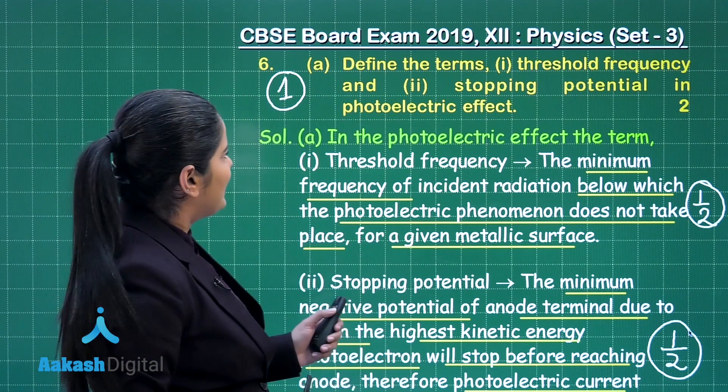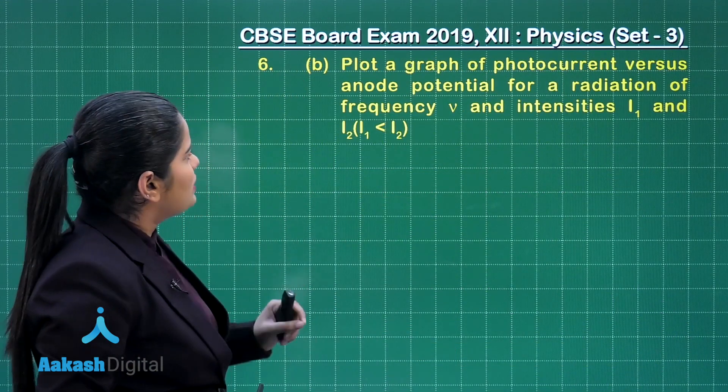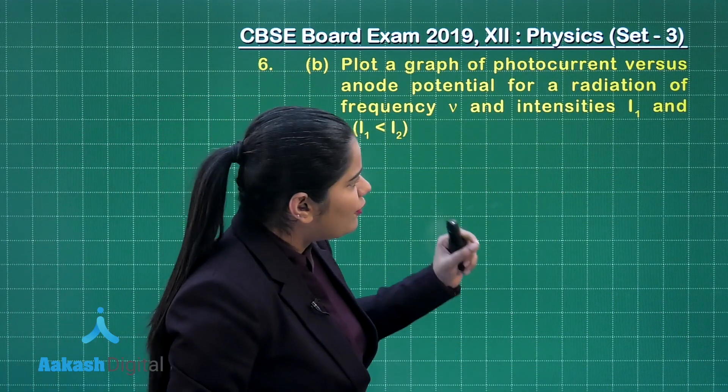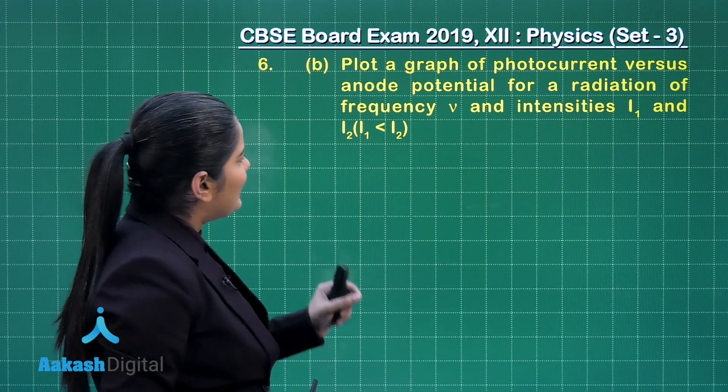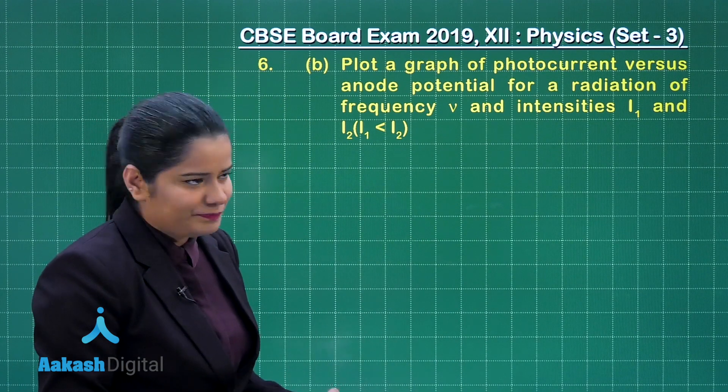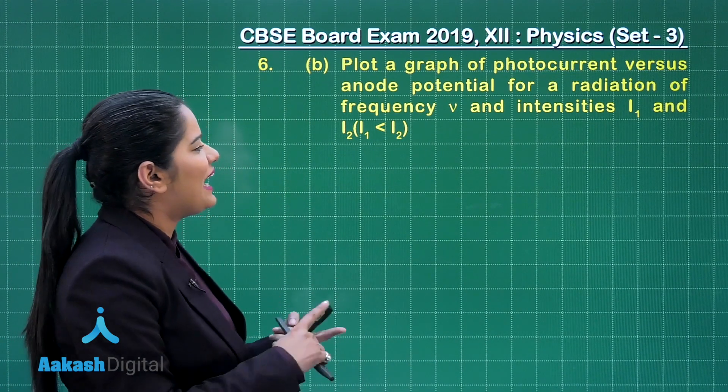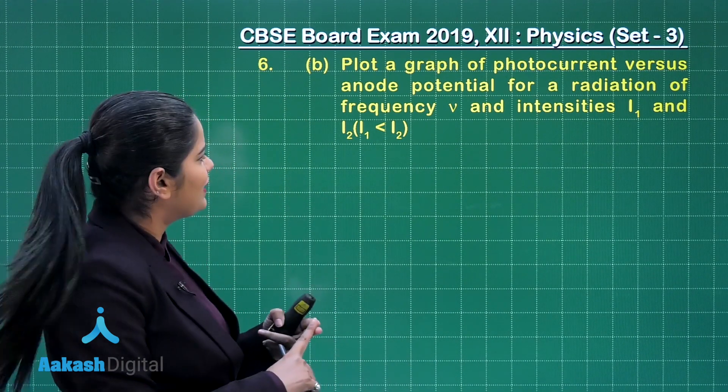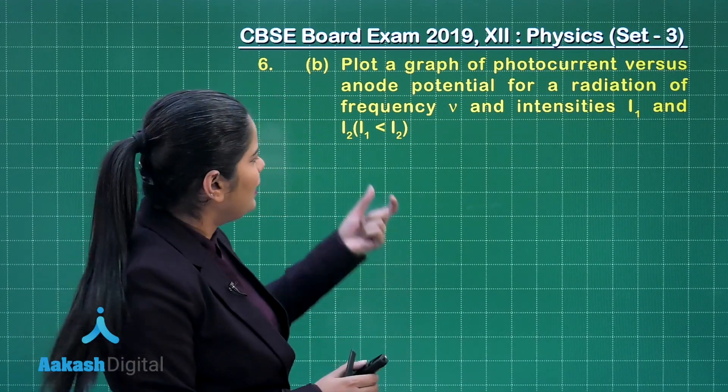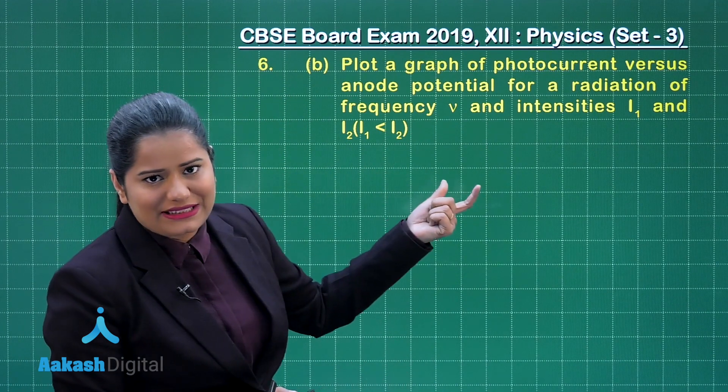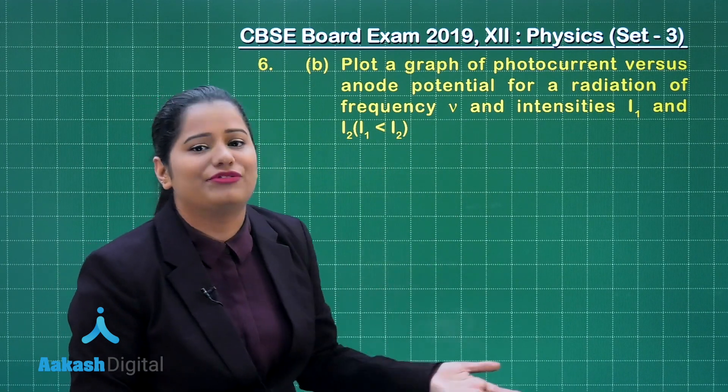Let us move on to the discussion for the second part of this question that is part B which wants us to plot a graph of photocurrent versus anode potential for a radiation of frequency ν and intensities I₁ and I₂. We are given I₁ is less than I₂. So the frequency remains same for both the intensities but intensity is different.